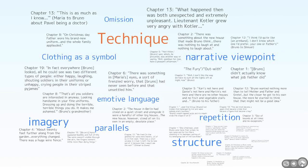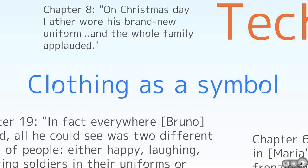You have to consider John Boyne's techniques — how he writes and the effect it has on the reader. Whatever question you get, you should try your best to talk about something that he does, and if you can put a label on it, that would be great. A technique that he uses may be evident in the quotation you're writing about. The first technique we've discussed is the use of clothing as a symbol — it represents something else.